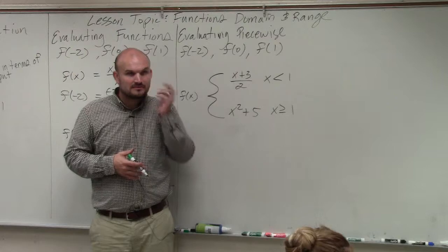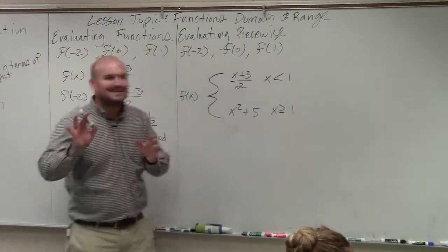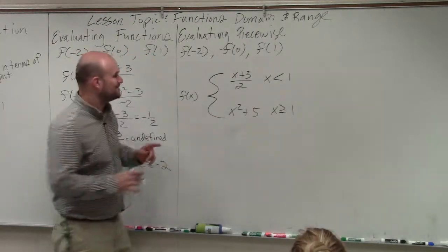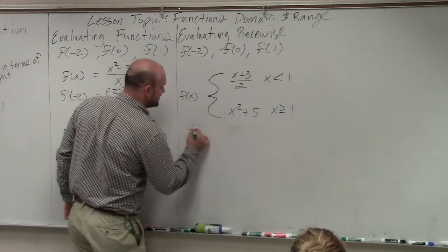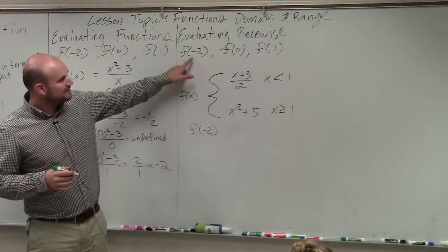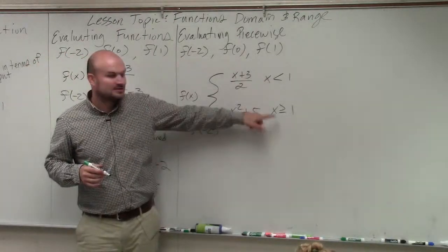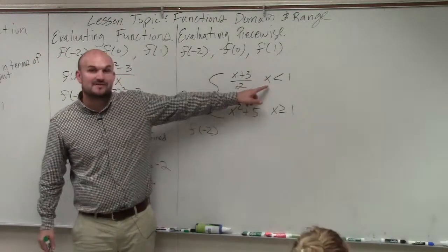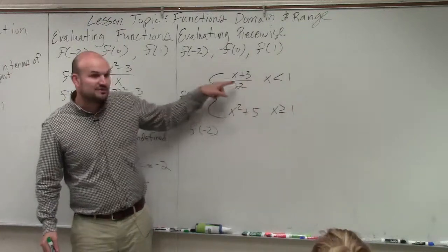Does that kind of make sense? Kind of? I had an idea. It doesn't really go with math, but I'll say it after I go with this. So let's go ahead and look at f of negative 2. f of negative 2. Well, we got to go to our constraints. Negative 2 is obviously less than 1. So I have to use this rule.